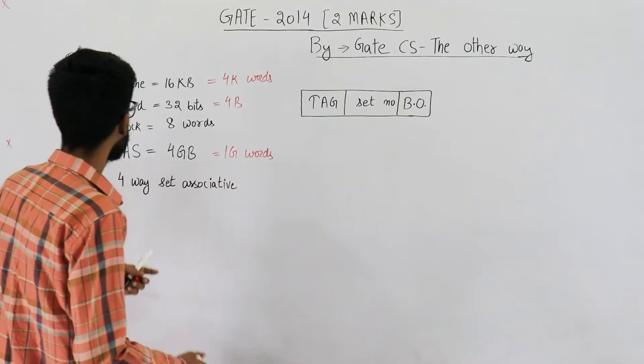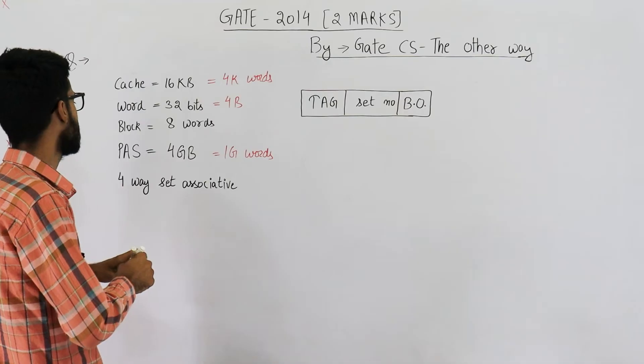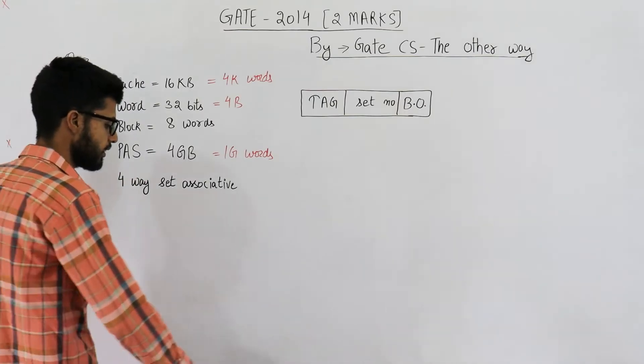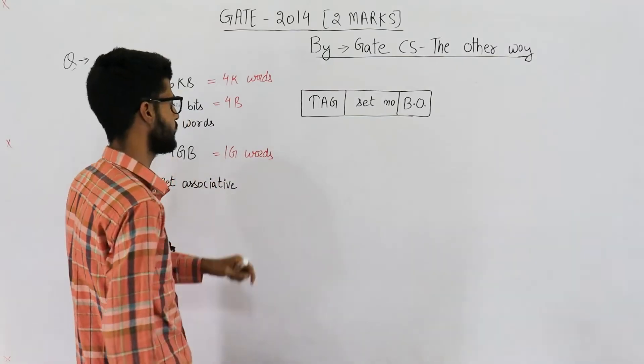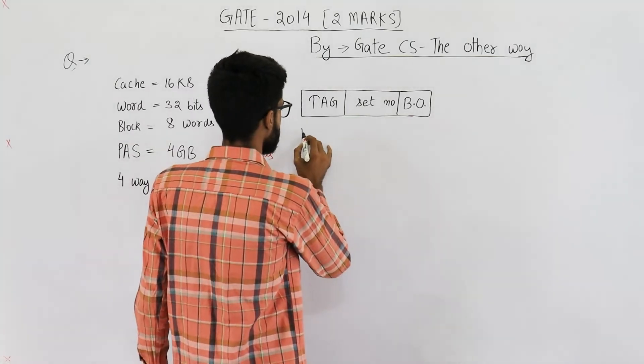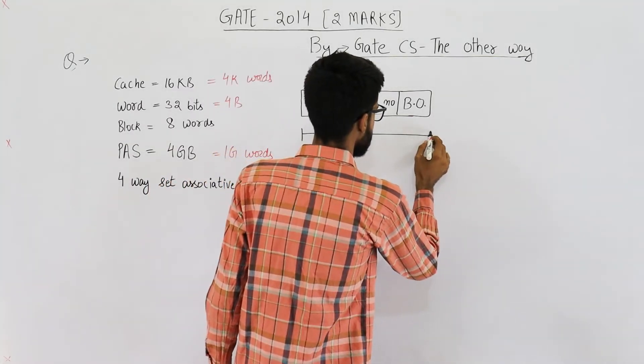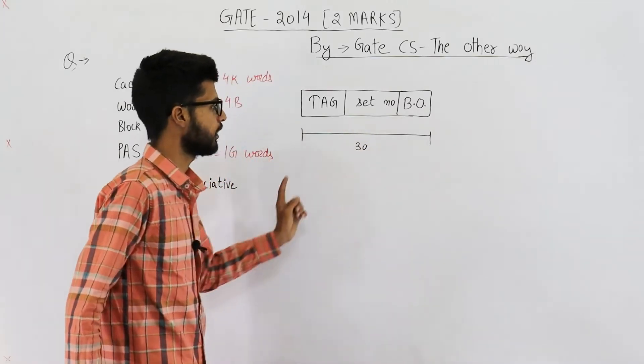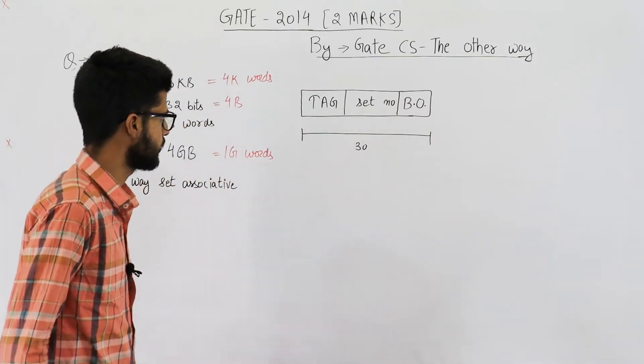Now let's find out the size of physical address. Physical address space is 1G words, so the physical address will be 30 bits, because 1G means 2 raised to the power 30. So the entire physical address here is 30 bits.